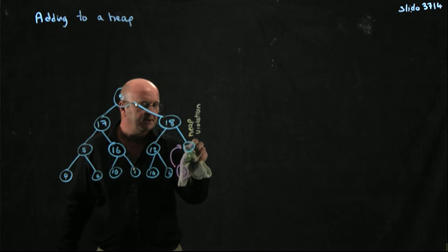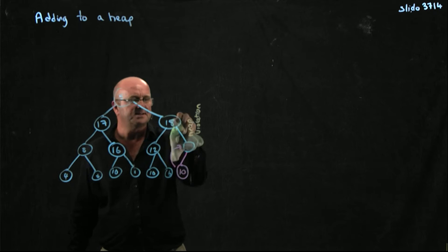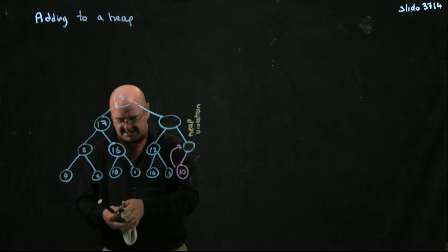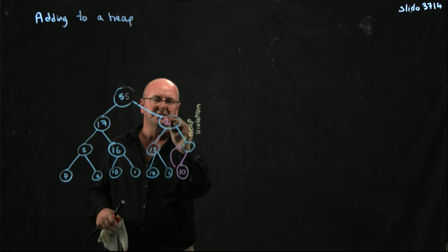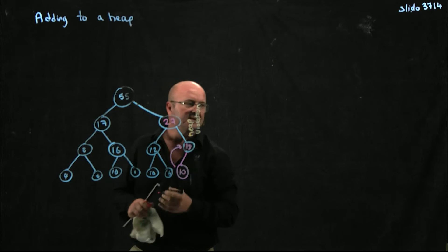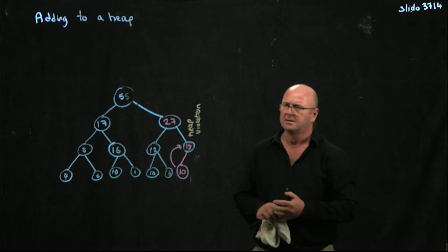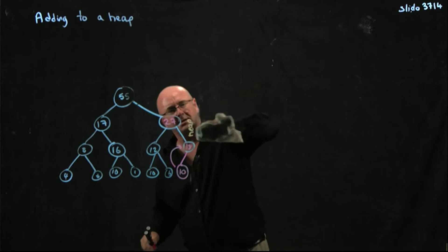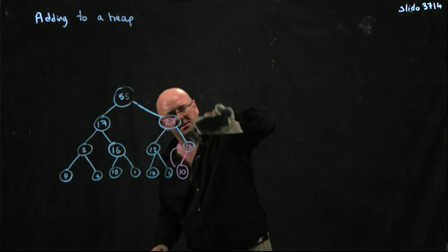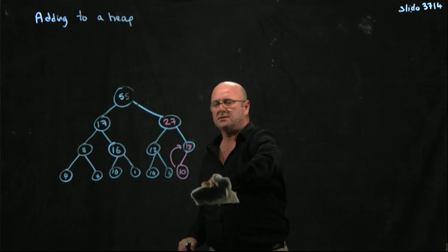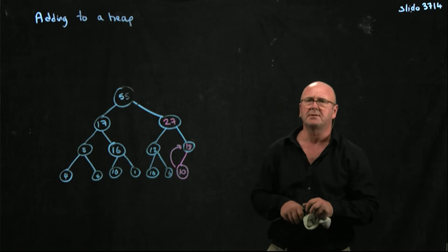I just swap my 27 and my 18. 27 moves up, 18 moves down. I fix that violation. And how does my heap look? Everything looks good in the world, okay?